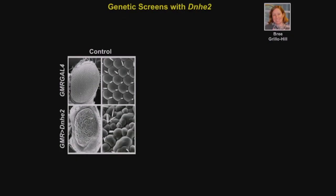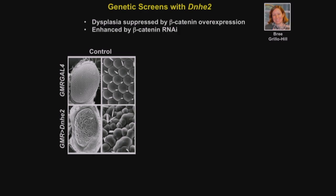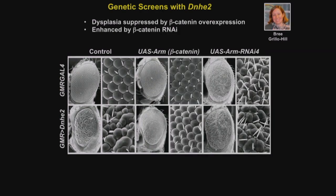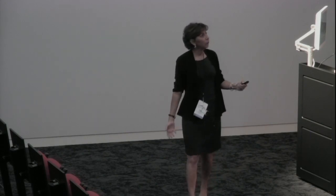Brie Grillo-Hill in our lab performed a targeted screen with signaling molecules on the rough eye phenotype caused by overexpression and dysplasia. The strongest hit was armadillo — mammalian beta-catenin. When we overexpress armadillo/beta-catenin, we nearly completely suppress the phenotype; when we knock it down, we enhance it. This suggested that dysplasia might be due to markedly decreased beta-catenin expression. We confirmed in both flies and mammalian cells that increasing pH leads to less beta-catenin expression.